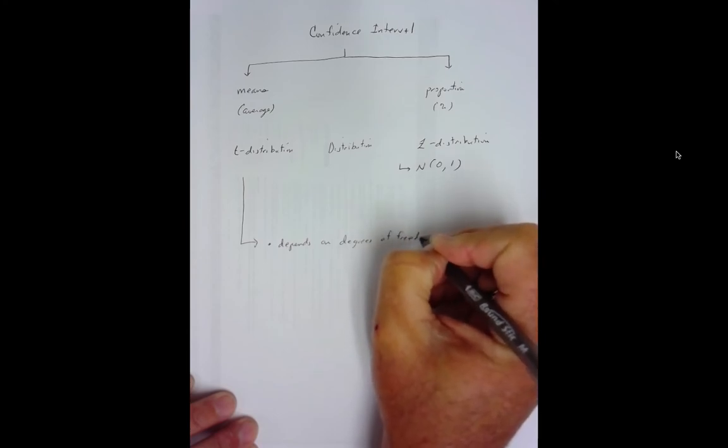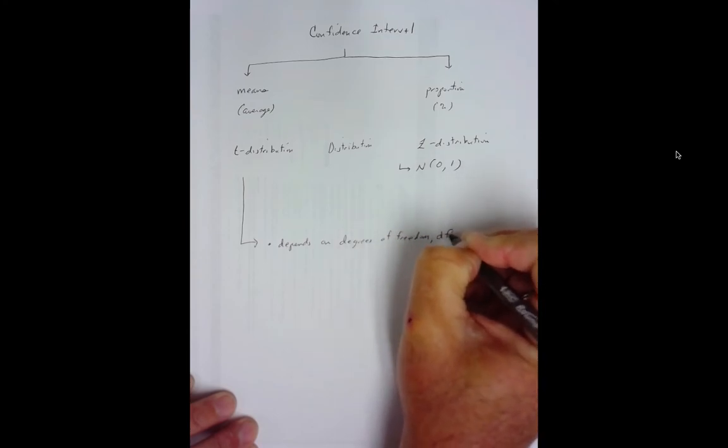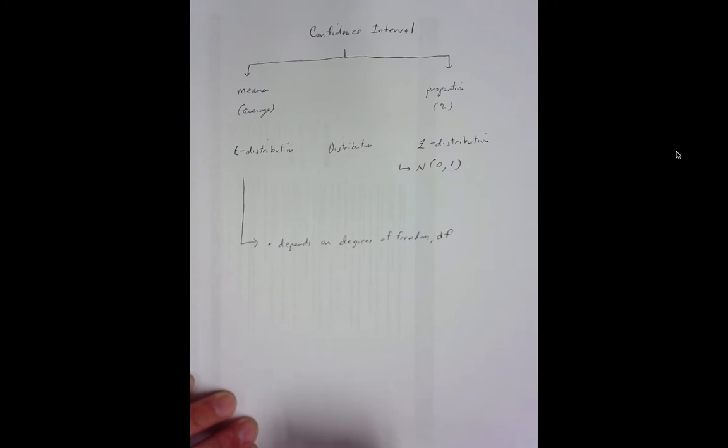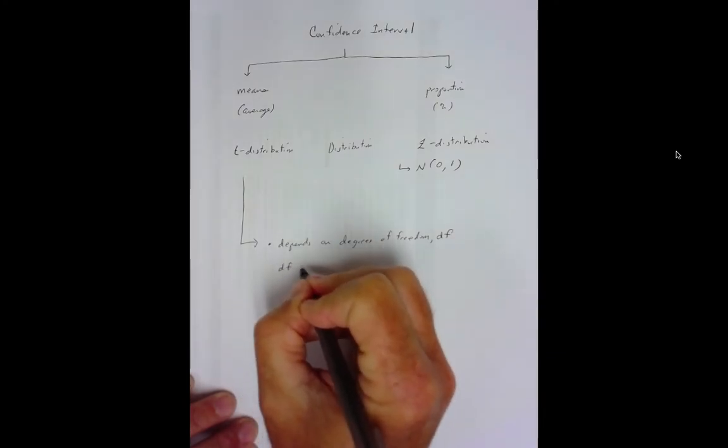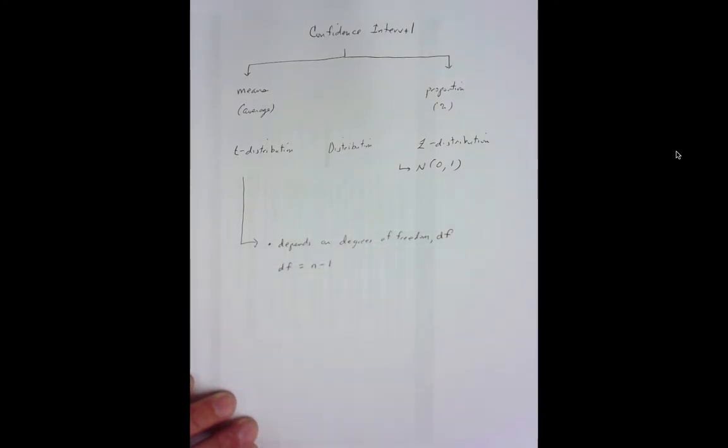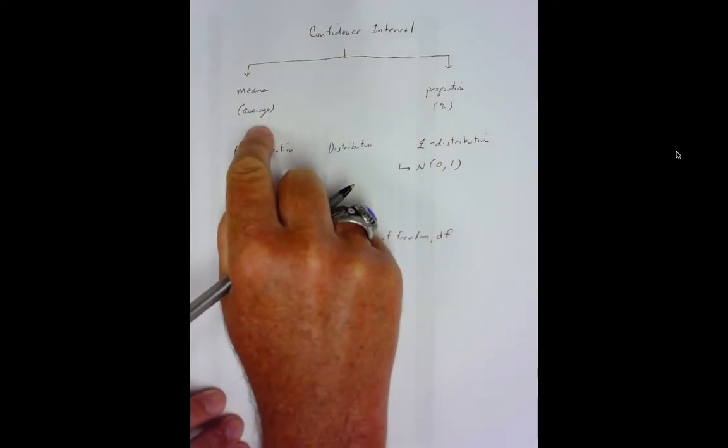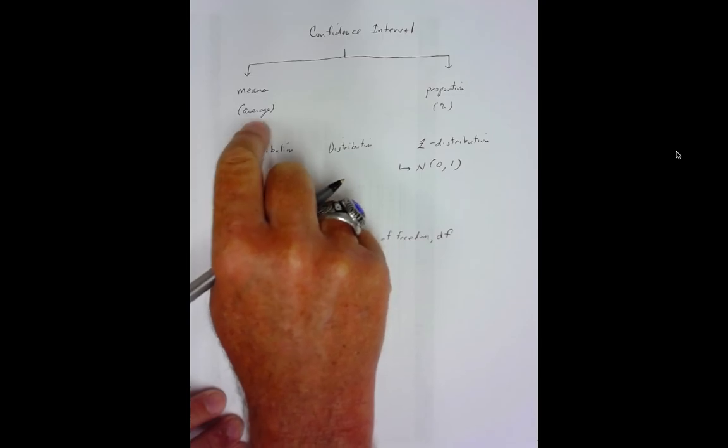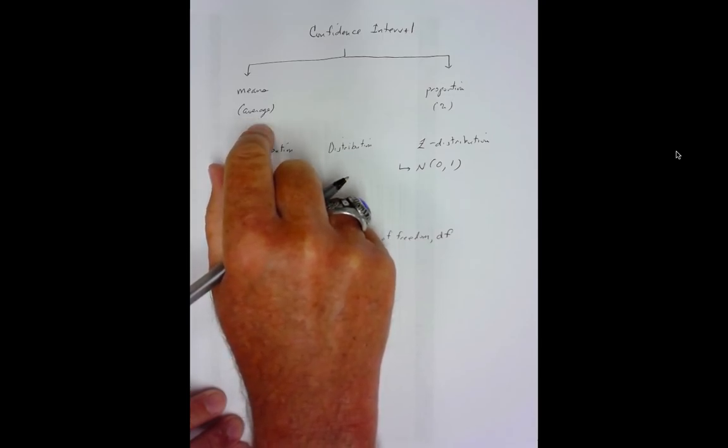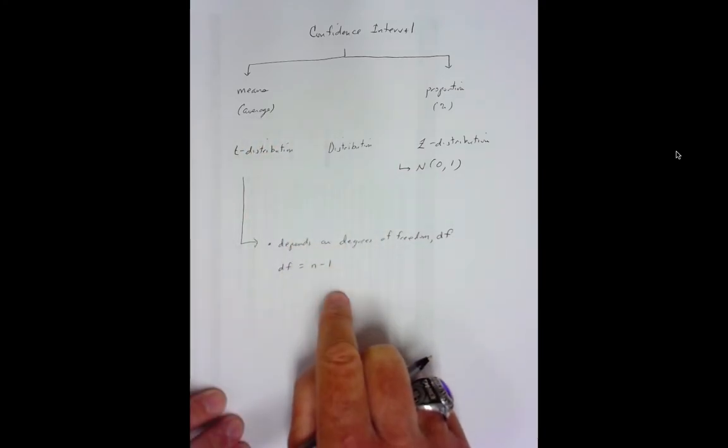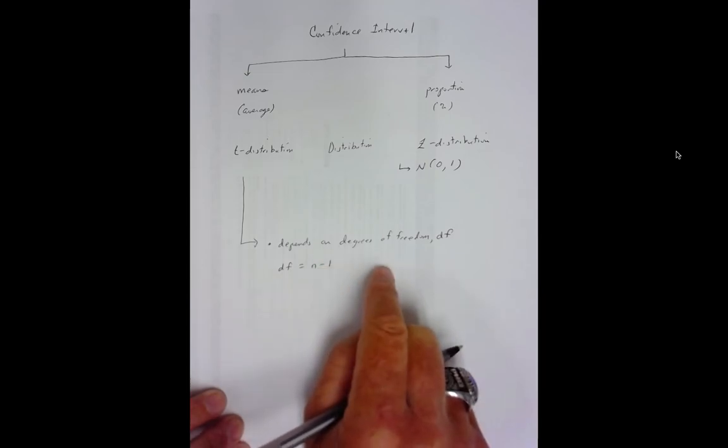Well, the problem is when we start estimating means, we use a sample and the population standard deviation isn't known. So we have to make a modification and use a different distribution than the one we learned back in the Central Limit Theorem. Now, a few things about the T-distribution. First of all, it depends on the degrees of freedom. Guys, the degrees of freedom is one of the easiest things I will ever ask you to calculate. The degrees of freedom is just a sample size minus one.